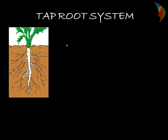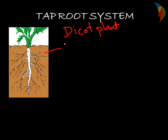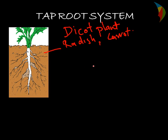The first type is the tap root system. This is the main common example of all dicot plants, like in the case of radish, carrot — that is all dicot plants. In this type of root system, the radicle continues to grow as a primary root and gives off branches.